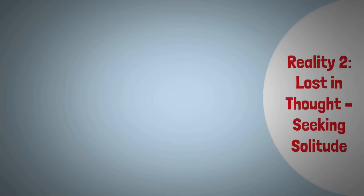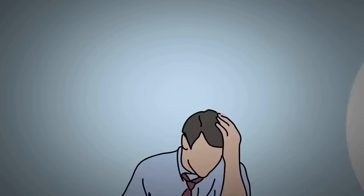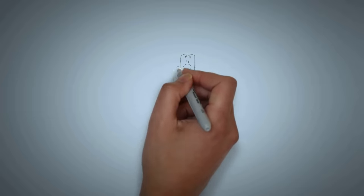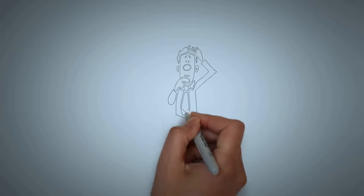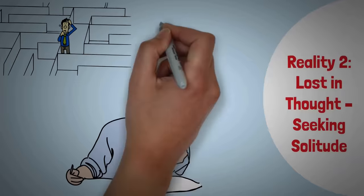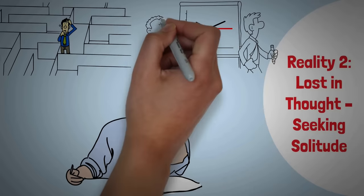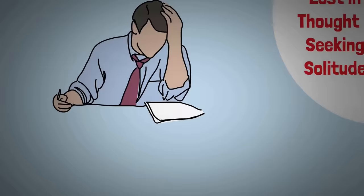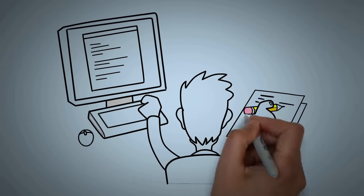Reality 2: Lost in thought, seeking solitude. Sigma men, they're the thinkers, the ponderers. They've got these minds that just keep churning thoughts. And it's not unusual for them to get lost in their own mental labyrinth. When that happens, they're not deliberately trying to ignore people, but their focus drifts away from the outside world. Sometimes, they need this quiet space to wrap their heads around things.